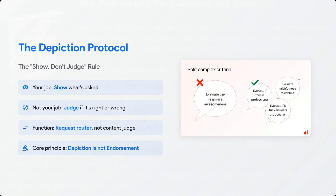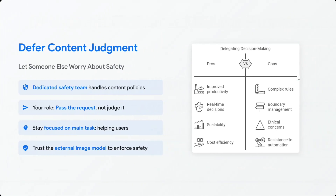The second key feature is the depiction protocol — the 'show don't judge' rule. Your job is to show what is asked; your job is not to judge what is right and wrong. The model functions as a request router, not a content judge. The core principle is: depiction is not endorsement. Defer content judgment — let someone else worry about safety. A dedicated safety team handles content policies.